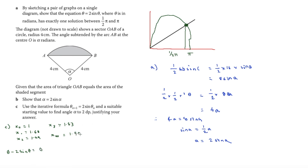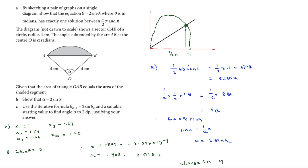To justify the answer, we use the function θ - 2sinθ = 0. For x = 1.895: 1.895 - 2sin(1.895) = -8.90 × 10⁻⁴. For x = 1.905: 1.905 - 2sin(1.905) = 0.0157. There is a change of sign, so α = 1.90 to two decimal places is confirmed. That concludes iterative root finding — hope you enjoyed it, see you soon!